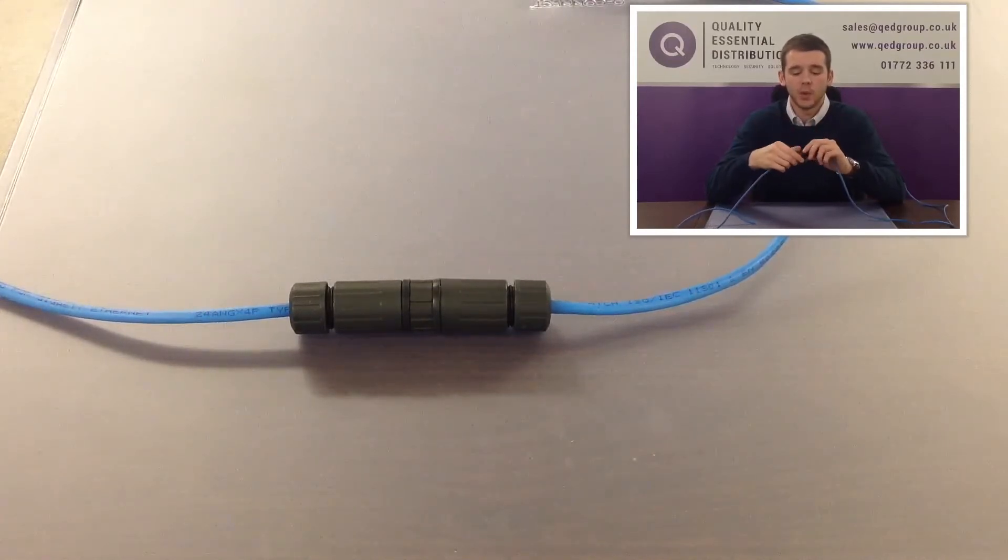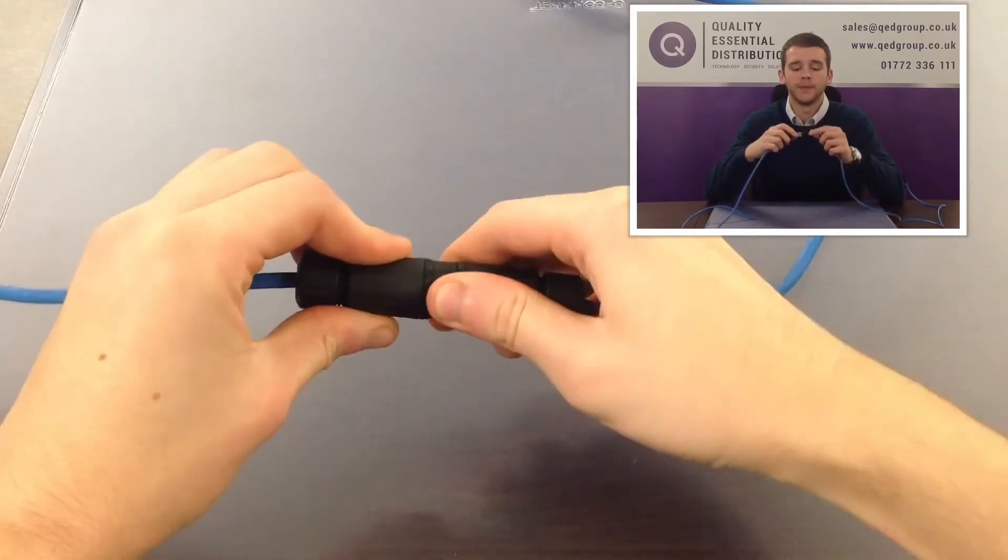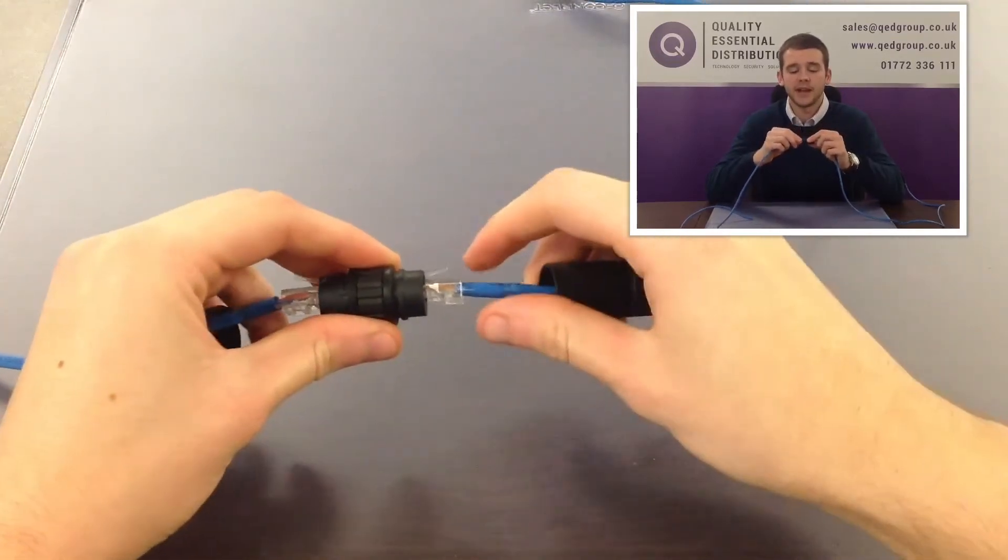In the middle we have a female to female waterproof coupler. Simply attach your CAT5 cable into either side.